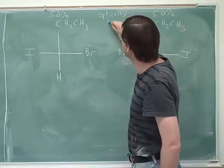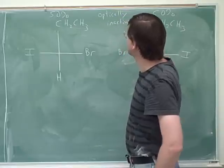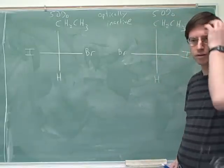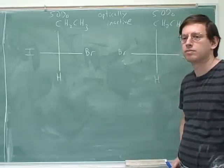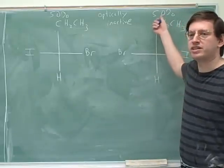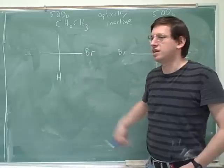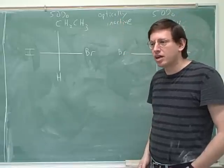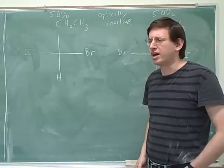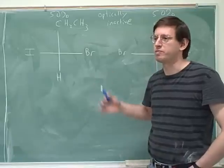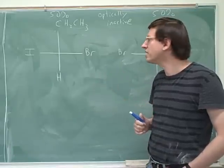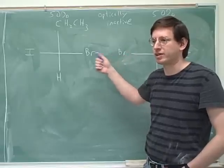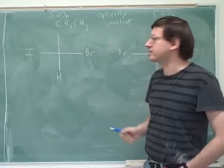Would both structures have to be drawn for us to realize that? If it said 50% of this one and didn't draw the other, would we be able to tell it's optically inactive? They have to tell you what the other 50% is. But if they tell you 50% this and 50% the enantiomer, you would know it's optically inactive. You can't really tell unless you know all the components. This is a racemic mixture — racemic mixtures are optically inactive because the two molecules cancel each other.